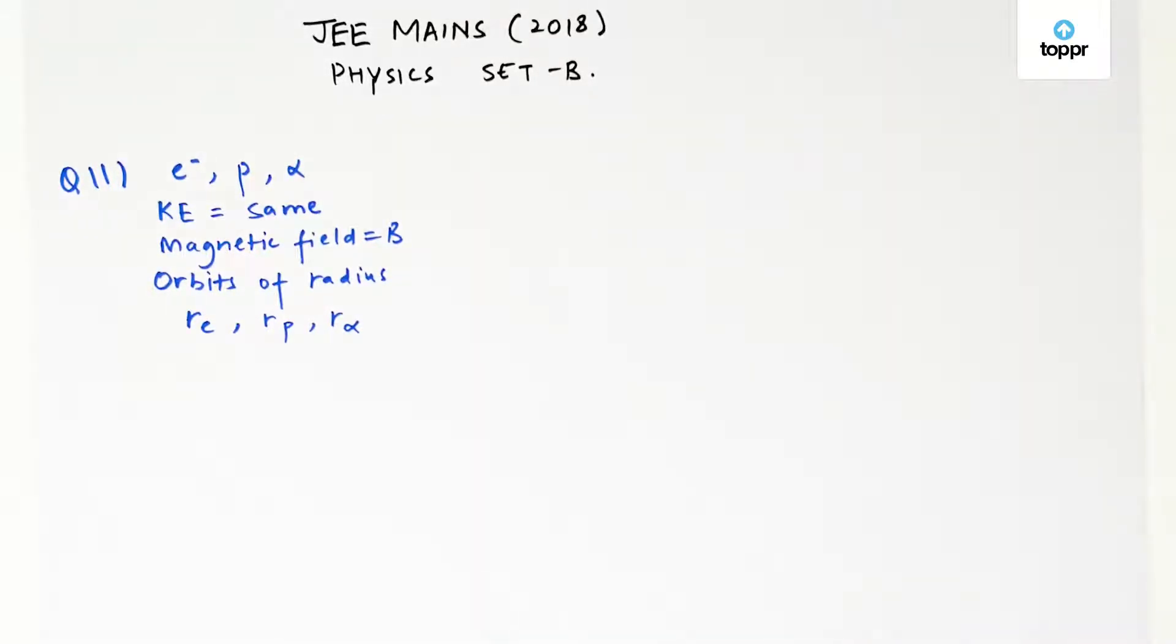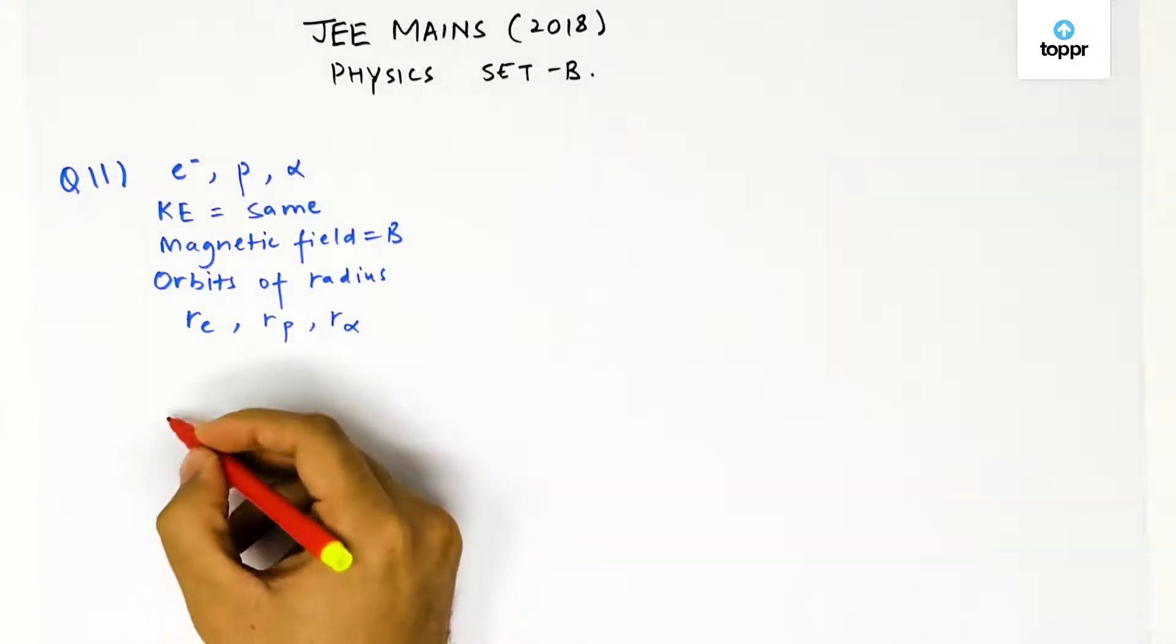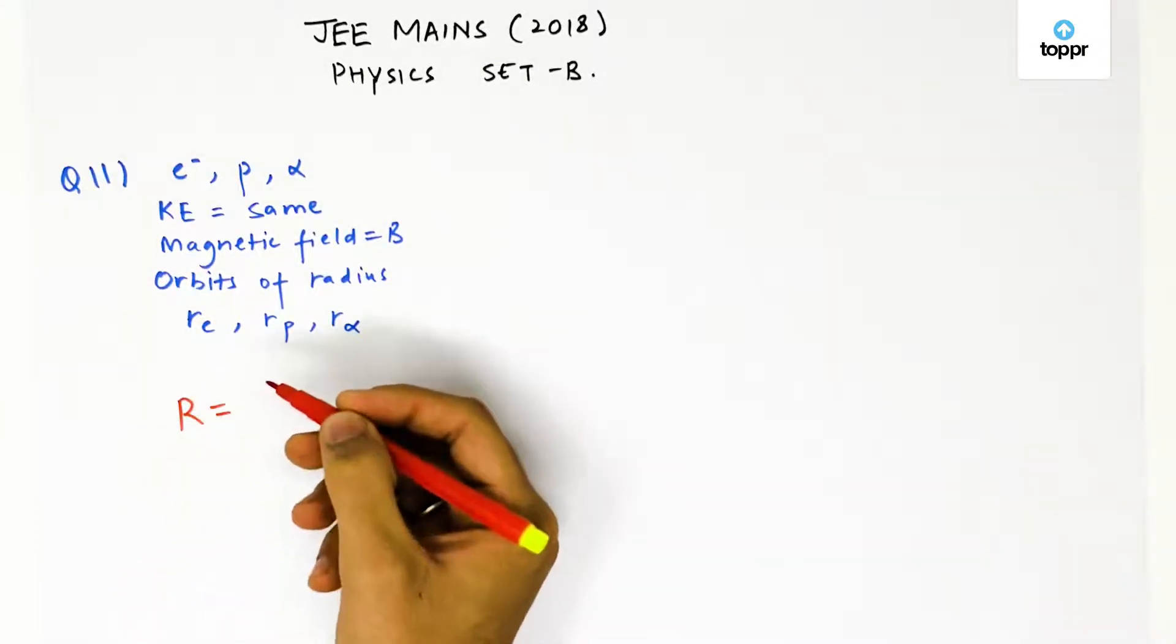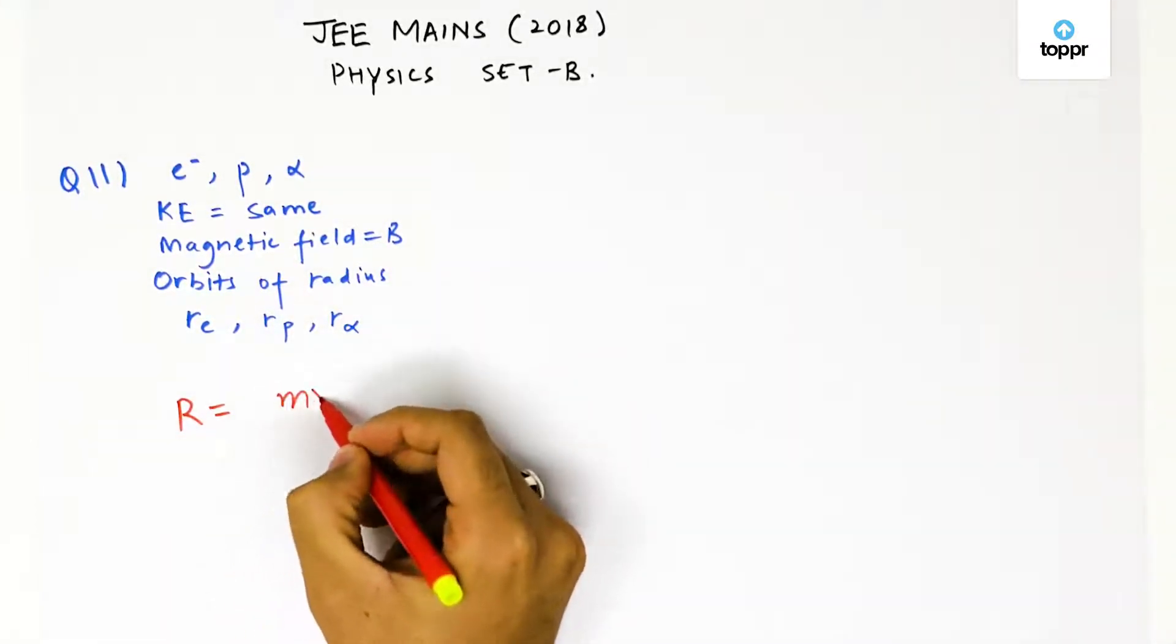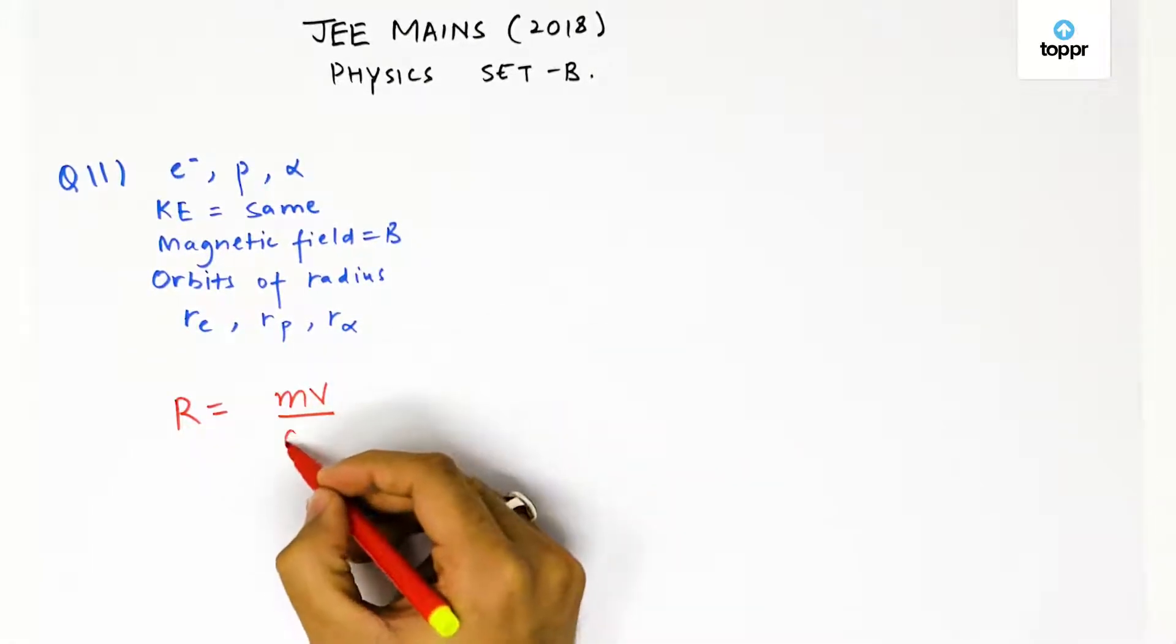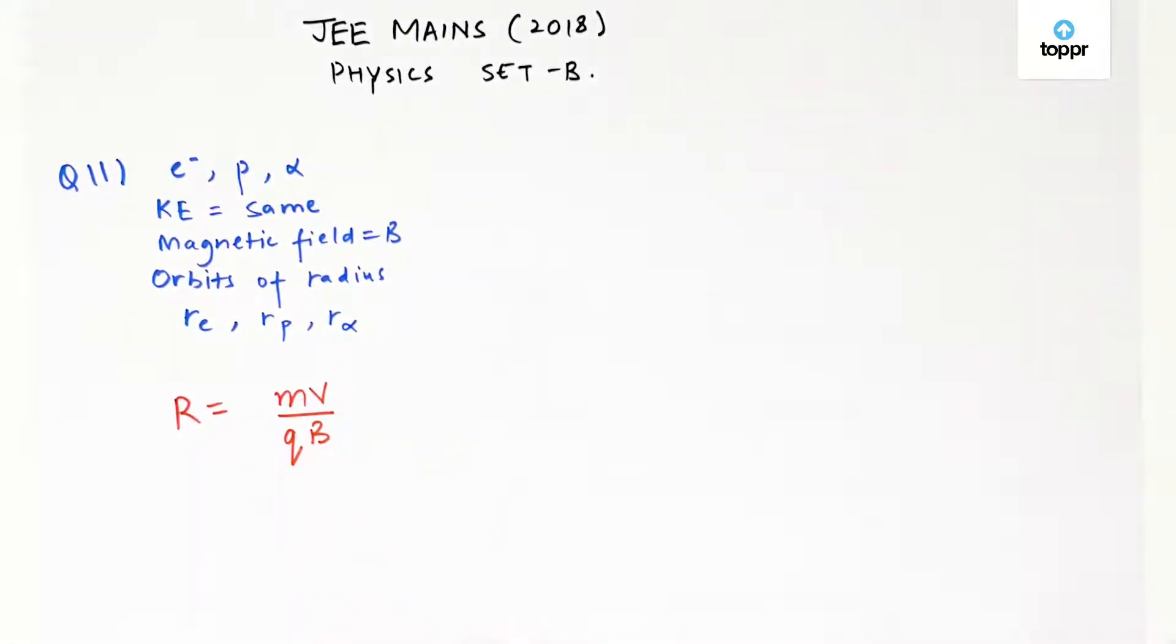First thing that is important to know is the formula here. For a circular orbit in magnetic field, the radius is given as R equals mv by qB. Where m is the mass of that particle, v is the velocity, q is the charge and B is the magnetic field.